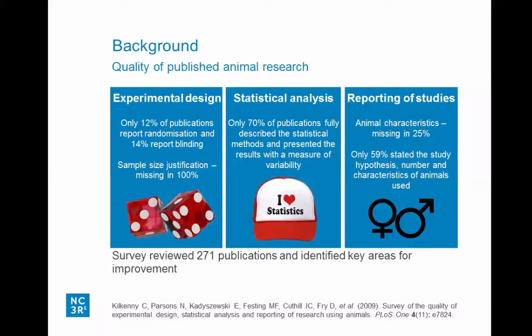We also looked at the quality of animal research when we started our program on experimental design. We carried out a survey of publicly funded research in the US and UK, examining experiments involving rats, mice, and non-human primates, and found significant scope for improvement. Very few publications reported randomization or blinding; none described how sample size was chosen. Only 70% described the statistical method used, meaning a third were missing minimum information necessary to understand the results. A quarter reported neither the weight nor age of the animals used.